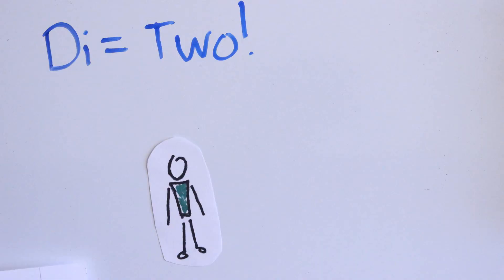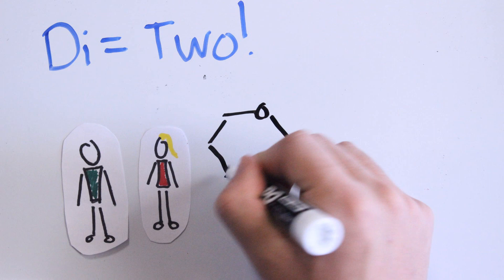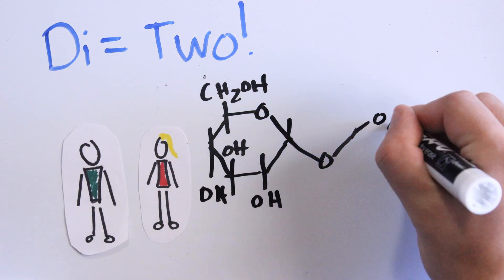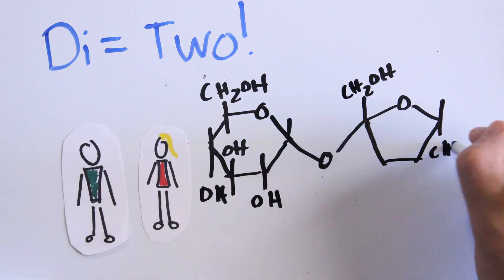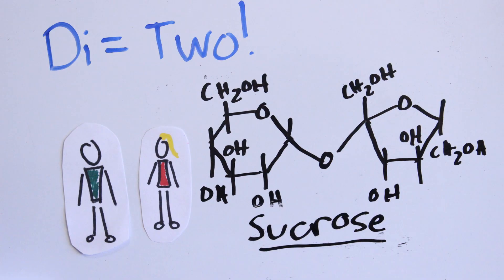Disaccharides — di meaning two — are two saccharides, or two sugar molecules, that have been linked together forming a chemical bond. An example of a disaccharide is sucrose, which is one glucose and one fructose bonded together.